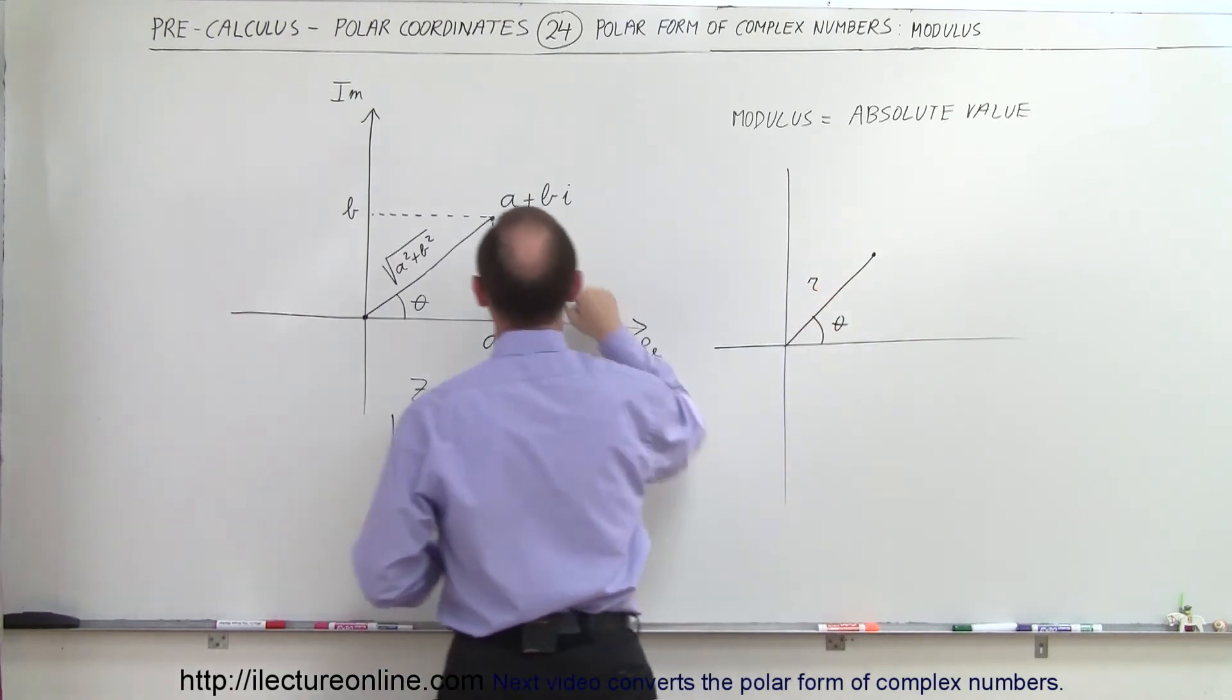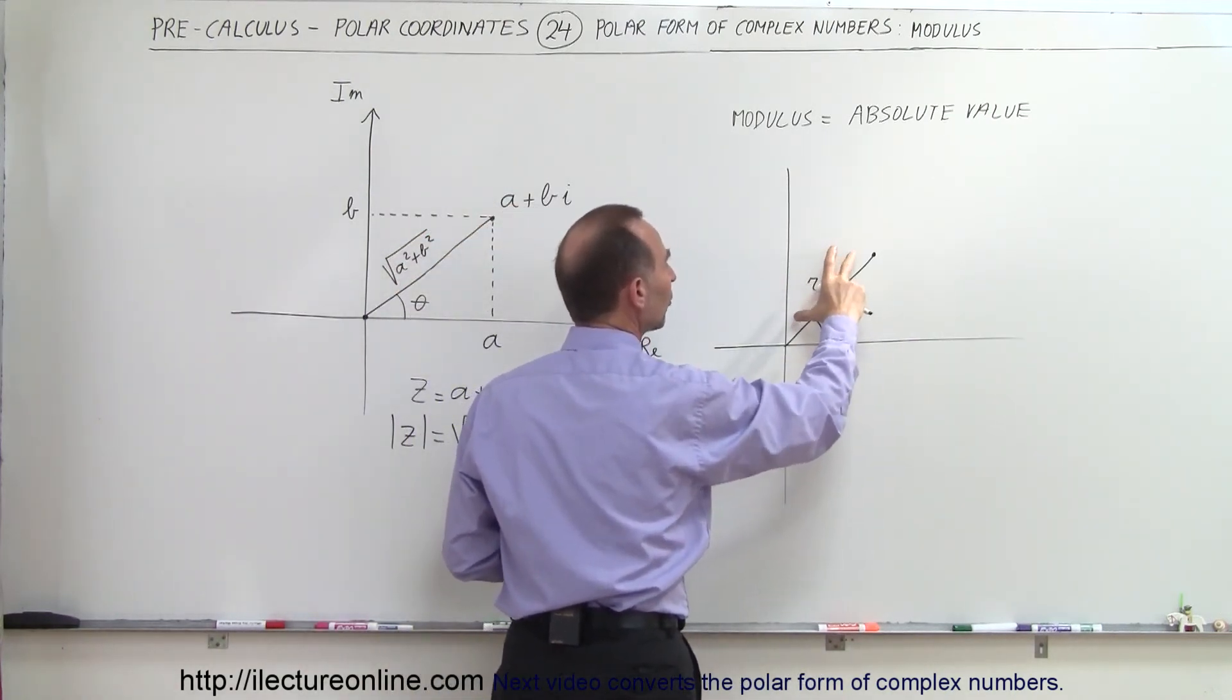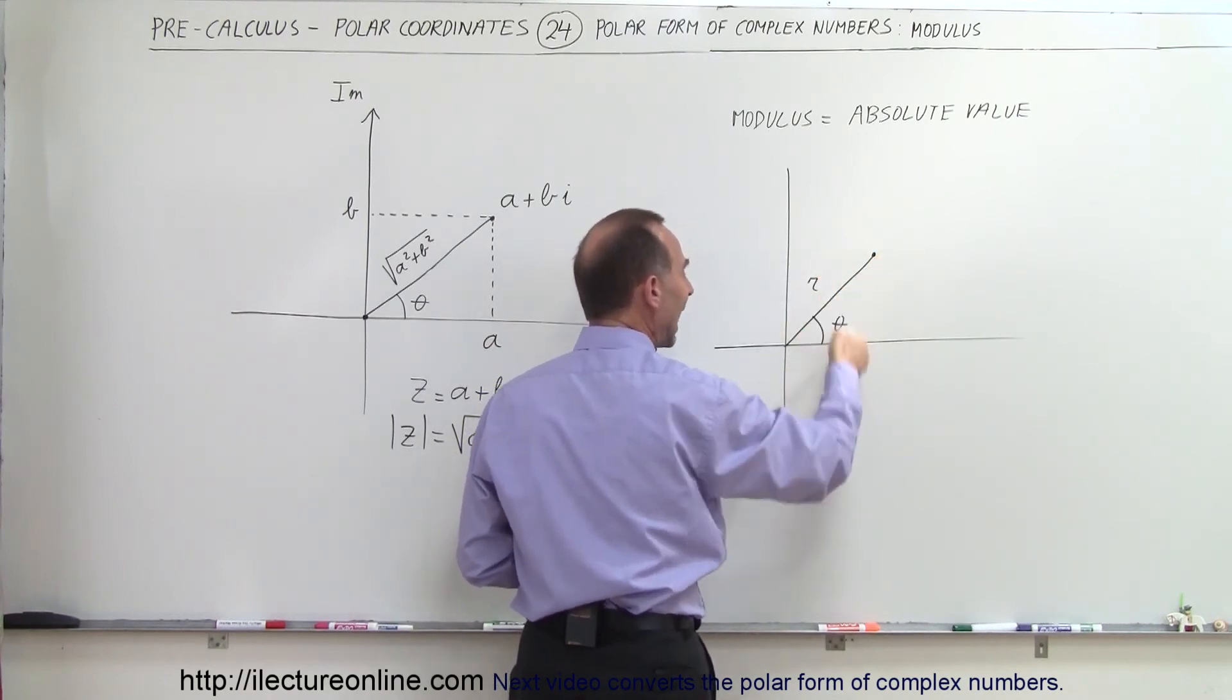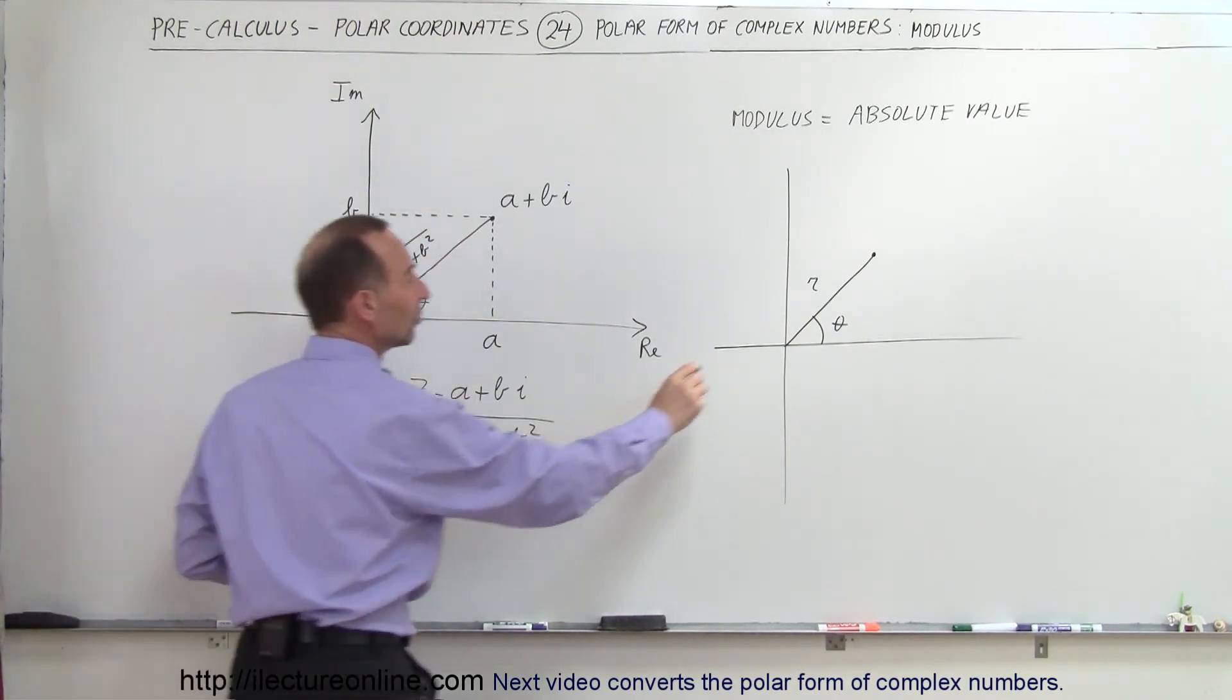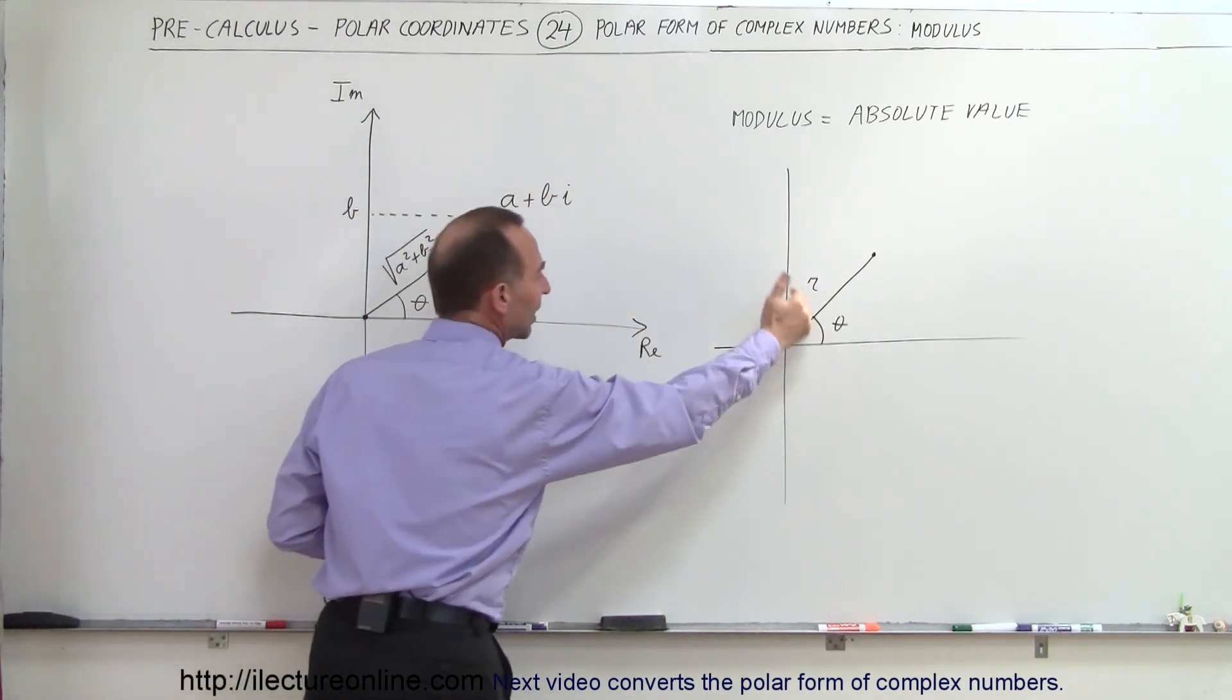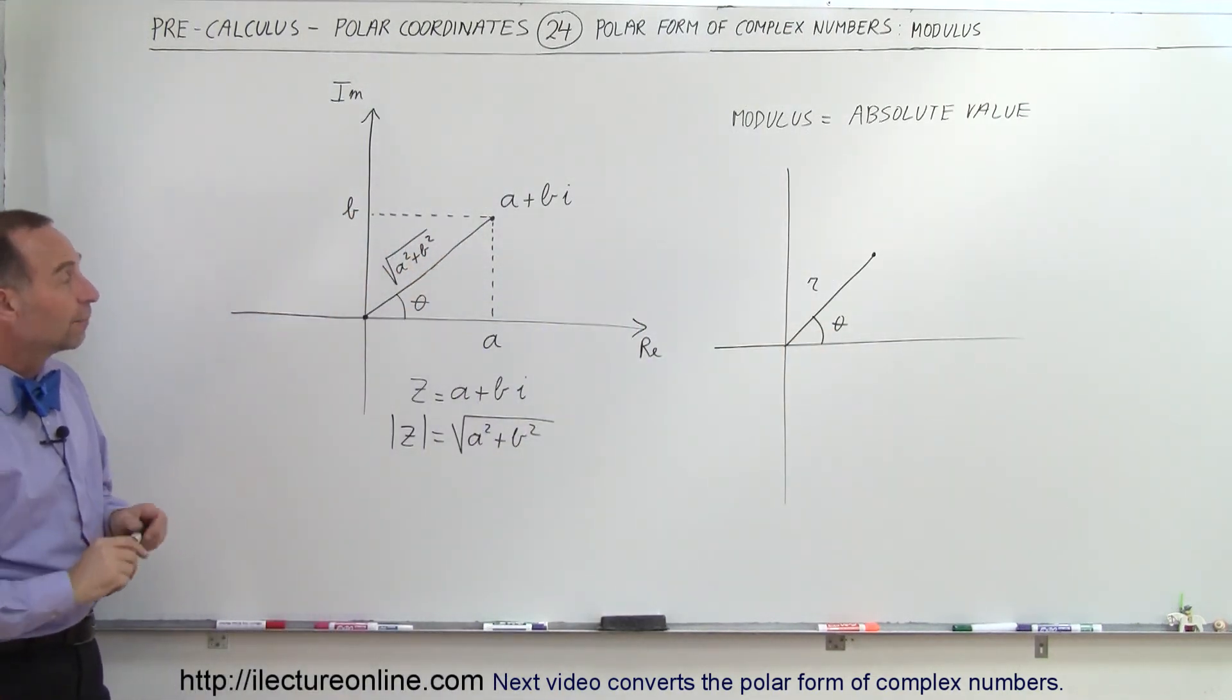So there's a relationship between a complex number and the polar coordinates where we have the radius or distance to the point and the angle relative to the horizontal axis. You can see the similarity between the two. The distance r would be similar to what we call the modulus or the absolute value of the complex number, and we have the angle theta which would be the same on both axes.